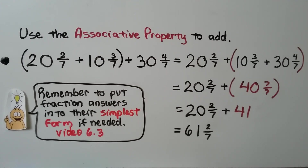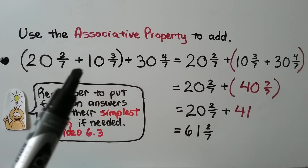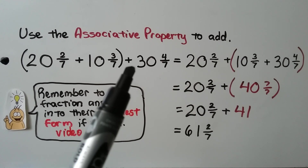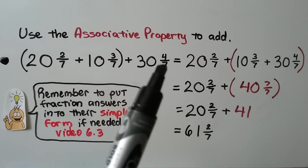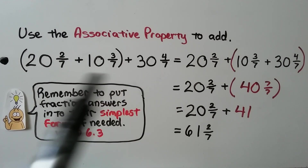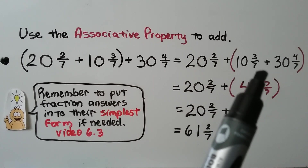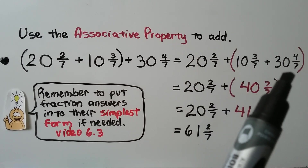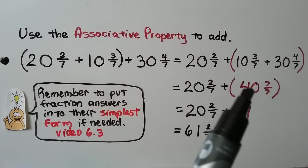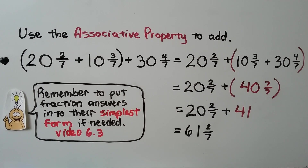Using the associative property to add: we have 20 and 2 sevenths plus 10 and 3 sevenths in parentheses, then plus 30 and 4 sevenths on the outside. We see 3 sevenths and 4 sevenths would make 7 sevenths, so we change the grouping and move the parentheses around the last two addends. We add 10 plus 30 to get 40, and 3 sevenths plus 4 sevenths to get 7 sevenths; 40 and 7 sevenths equals 41. Now we add 20 and 2 sevenths to get 61 and 2 sevenths.